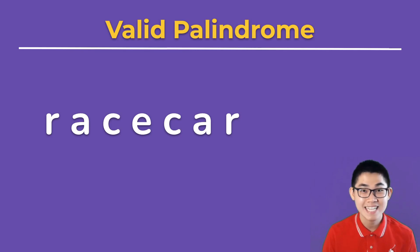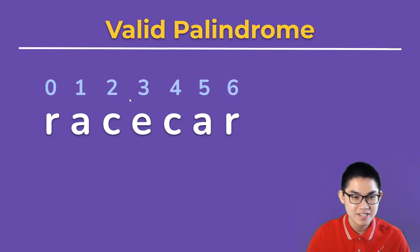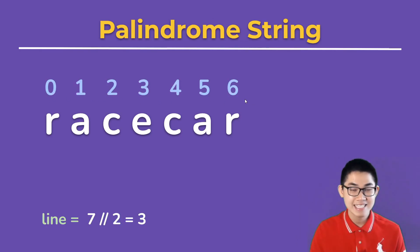Let's take a look at the second solution. Using racecar as an example, we'll first put the indexes onto the string, and then the next step is to determine something called a line. The line is equal to the number of letters, so there are 7 letters in total.